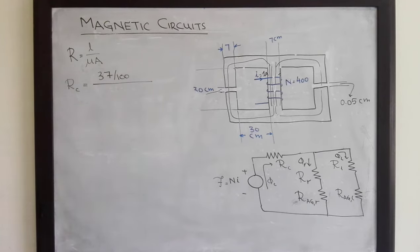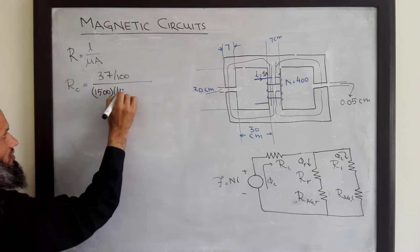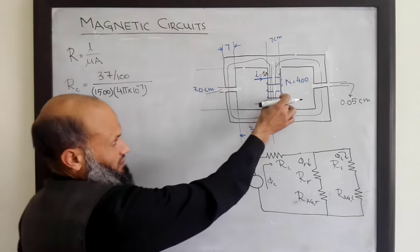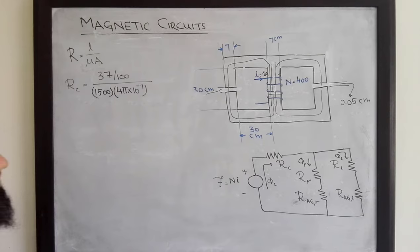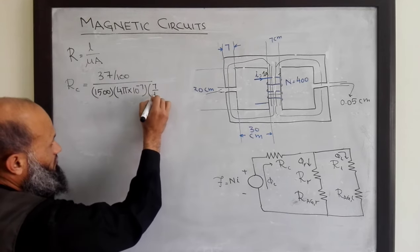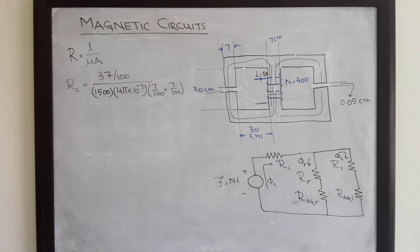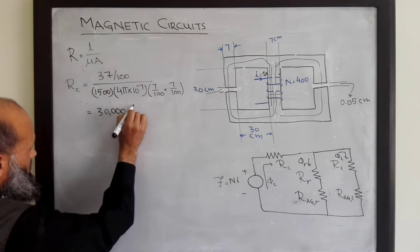Mu equals mu-naught multiplied by mu-r. The relative permeability is 1500, so mu equals 1500 multiplied by 4π × 10⁻⁷. The cross-sectional area of the central limb is 7 centimeters times depth, which is also 7 centimeters. So area equals 7/100 multiplied by 7/100 in meters. Computing all this, the central limb reluctance comes out to be 30,000 ampere-turns per weber.